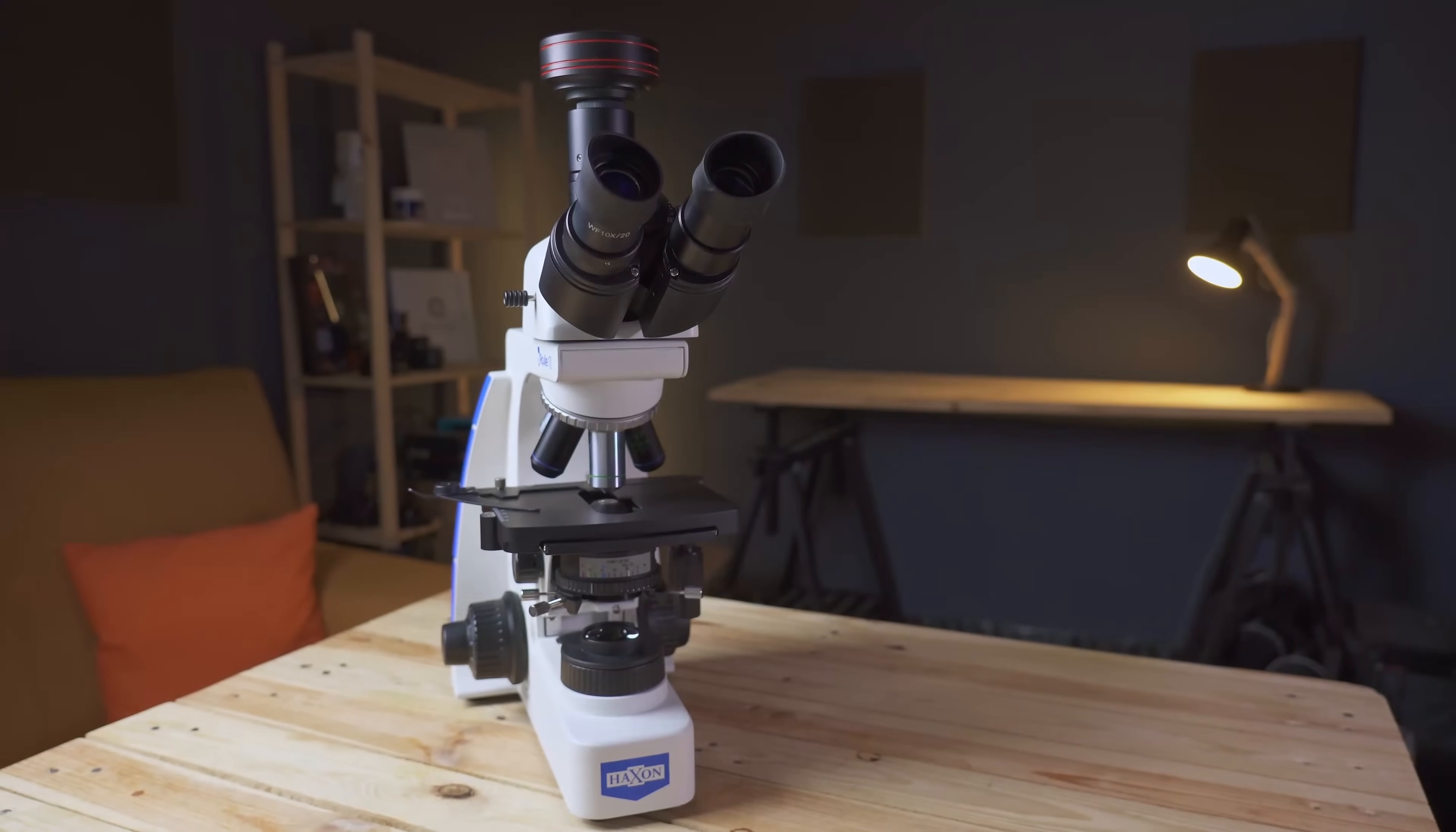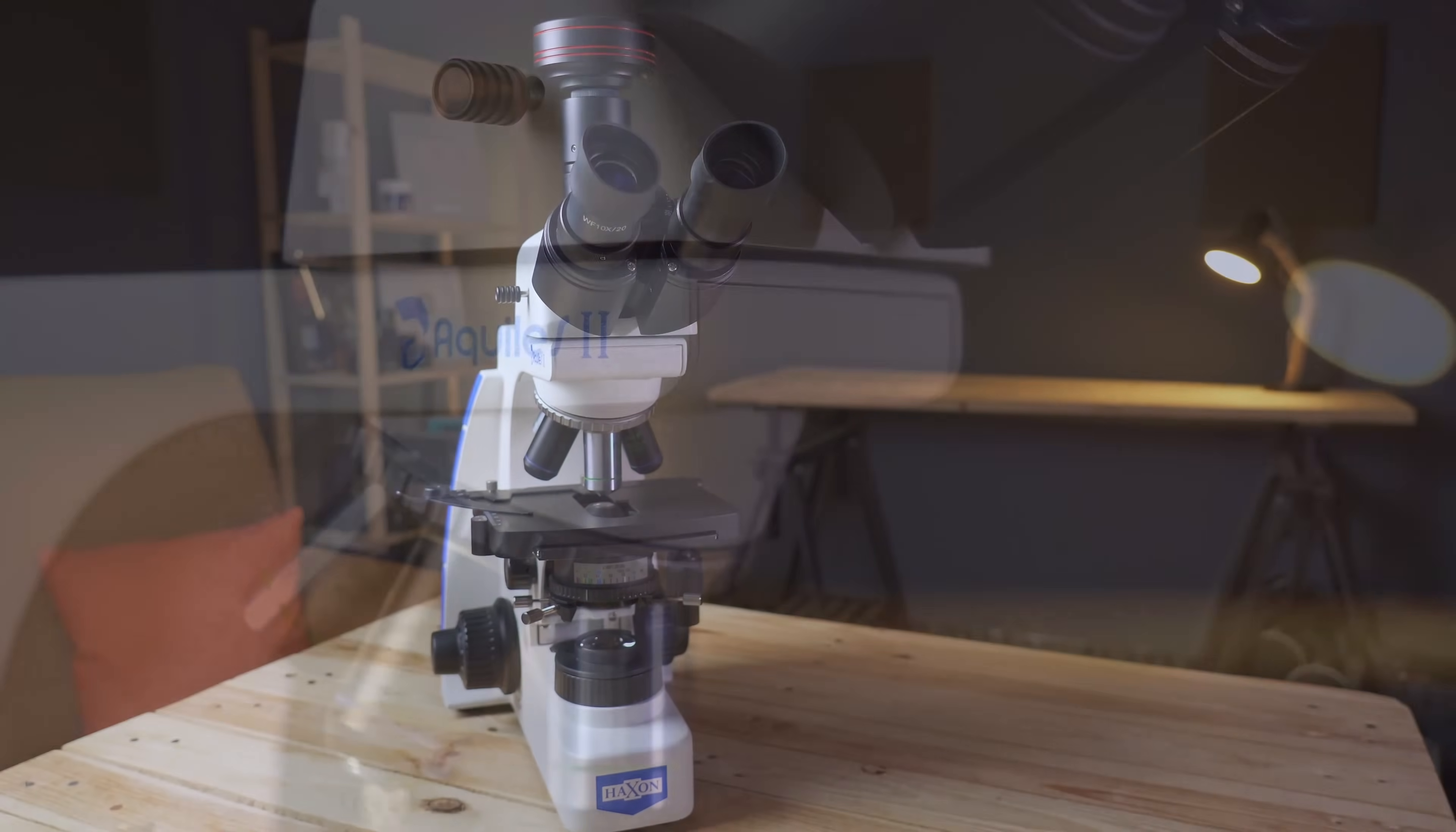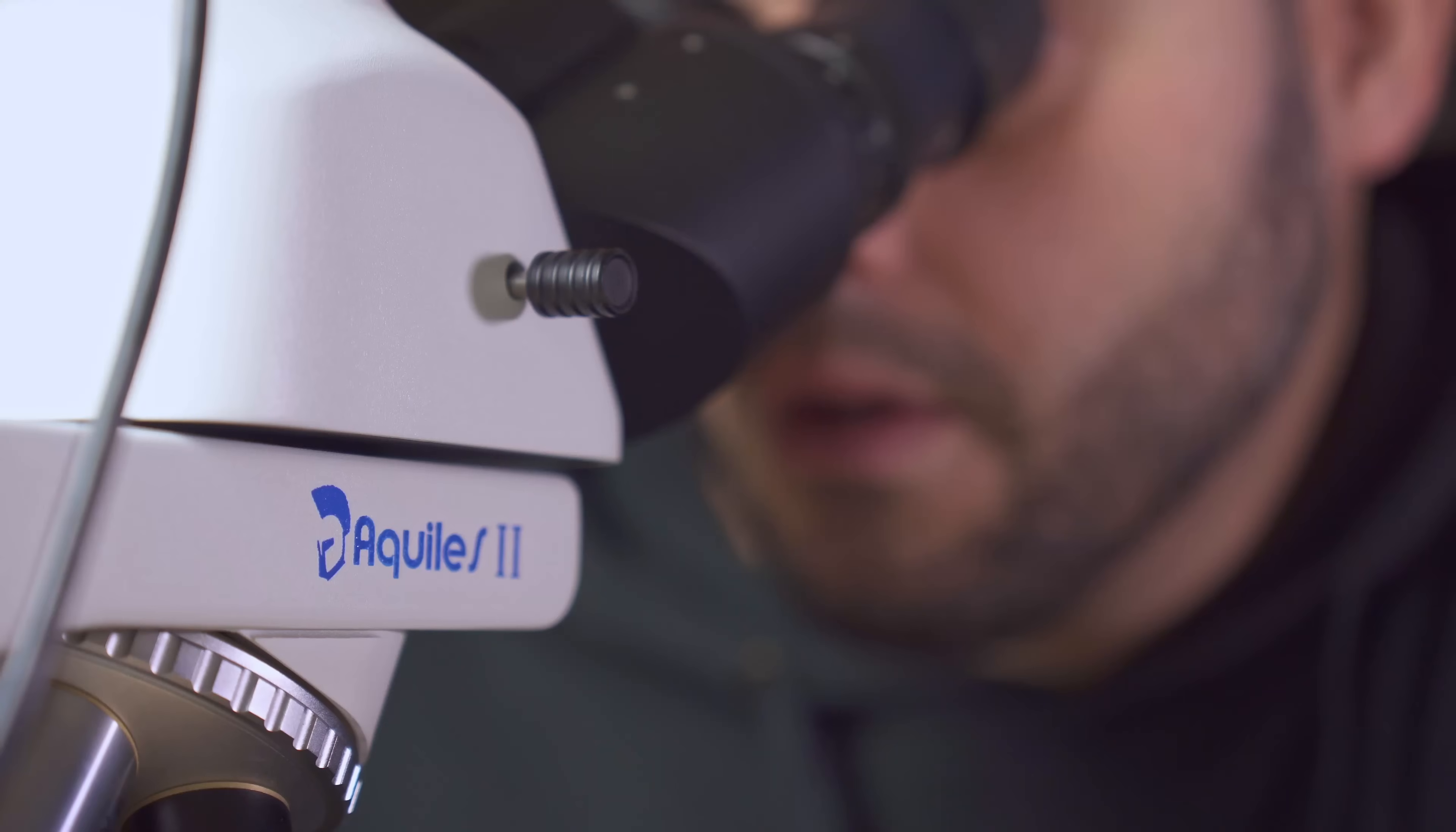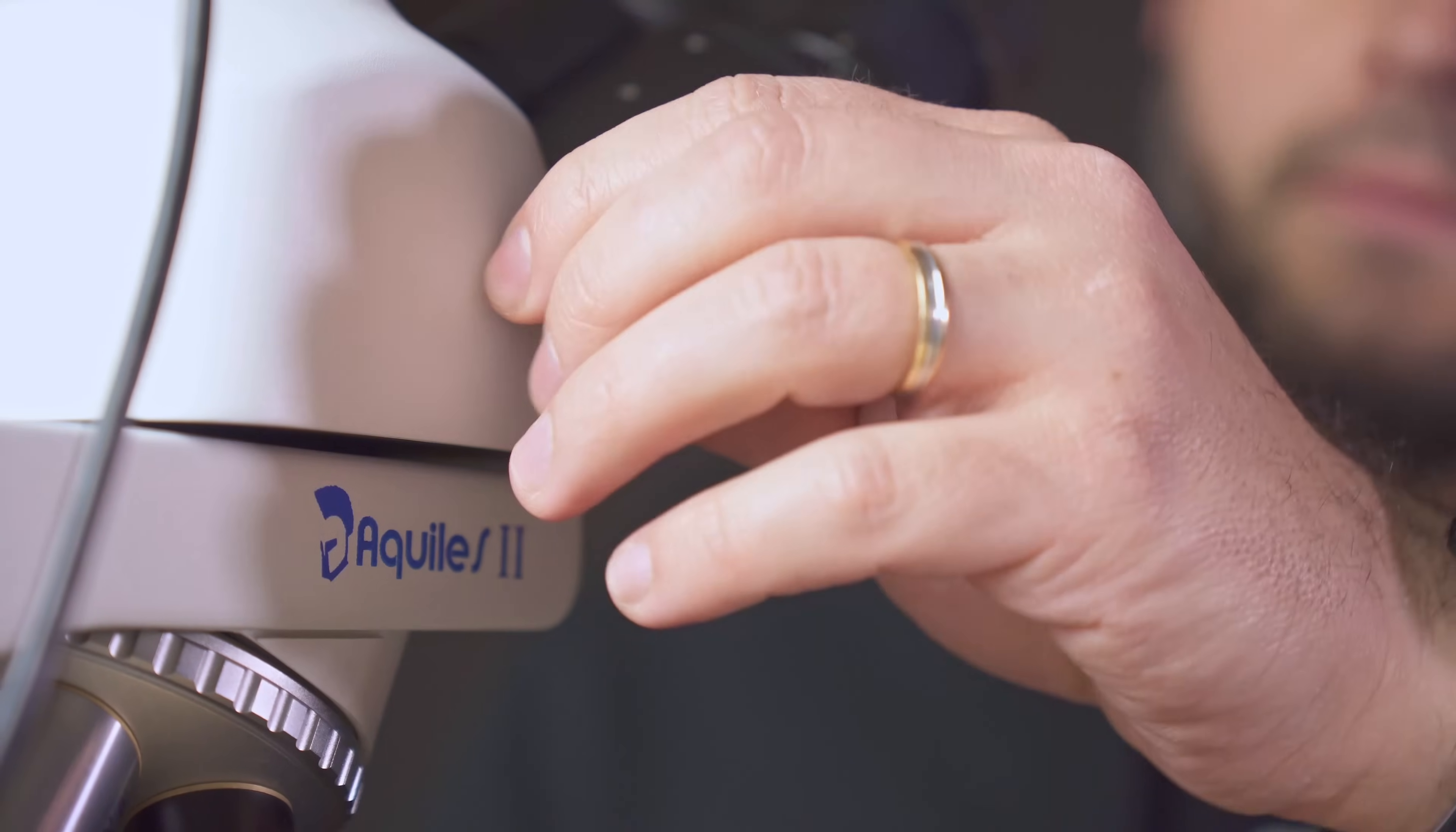What I have mounted here is an Axon Aquiles II trinocular biological microscope with phase contrast. A microscope especially aimed at the world of microphotography, because it allows the light beam to be directed directly to the camera without needing to reflect it in prisms or pass it through lenses.